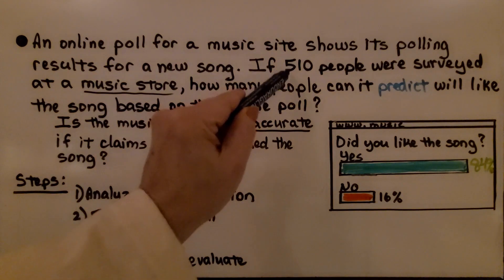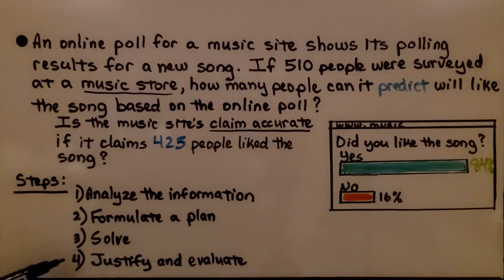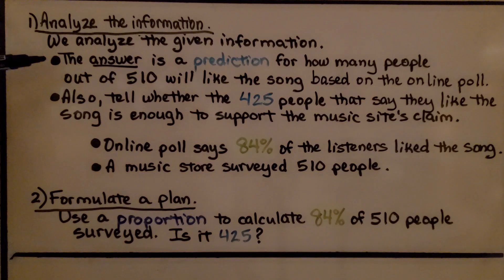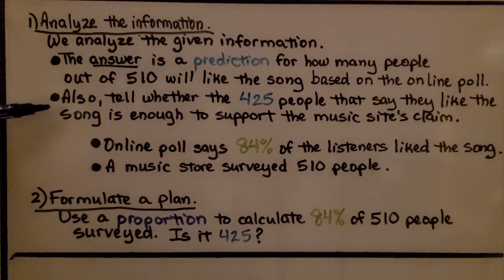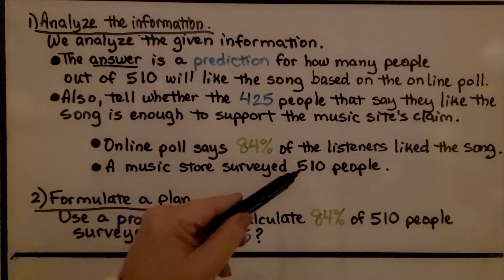We know that 510 people were surveyed at the music store. Here are the steps we're going to take: analyze the information, formulate a plan, solve it, and then justify and evaluate. Analyzing the given information: the answer is a prediction for how many people out of 510 will like the song based on the online poll, and we need to determine whether the 425 people who say they like the song supports the music site's claim. The online poll says 84% liked the song and the music store surveyed 510 people.